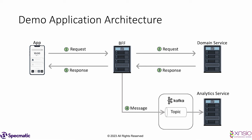In order to allow the app and the BFF to independently develop and deploy, we capture the contract between them in an OpenAPI specification. This captures things like the URLs exposed by the BFF, request parameters, mandatory and optional parameters, HTTP response statuses, and the schema of the response. Similarly, between the BFF and domain service, we have an OpenAPI specification. For Kafka, we capture the specification in AsyncAPI, describing the available topics and their message formats.